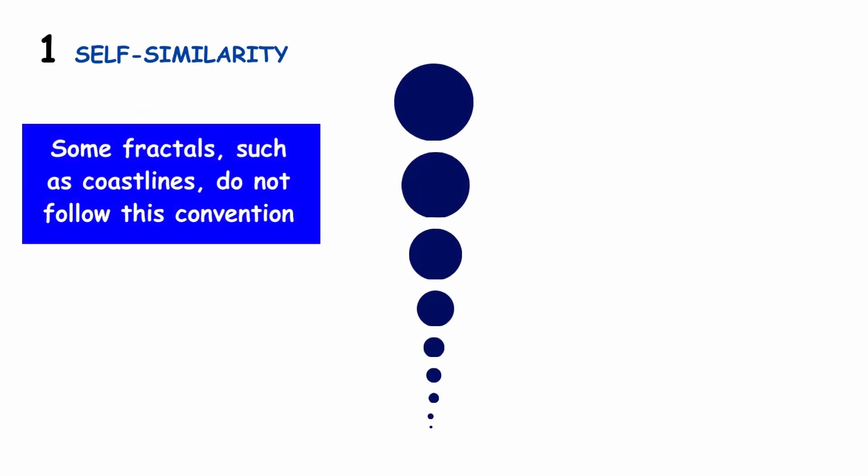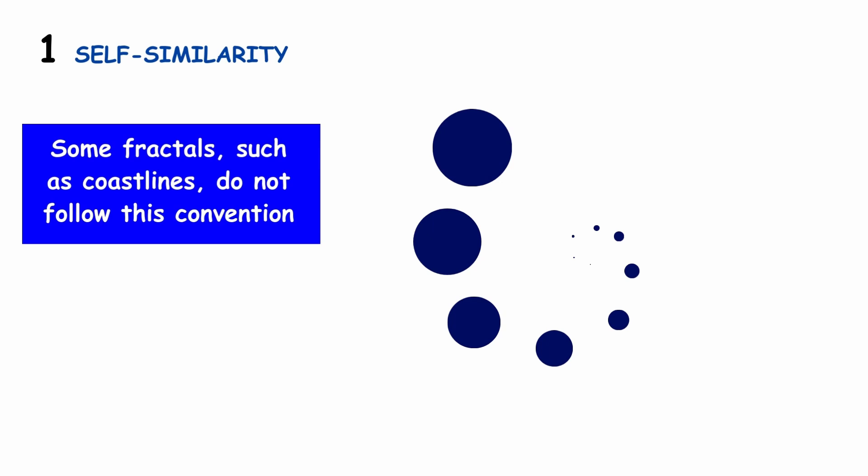Fractals have several characteristics that distinguish them from traditional geometric figures. First, self-similarity: a structure that is repeated at different scales.